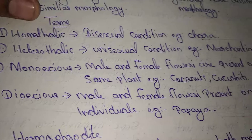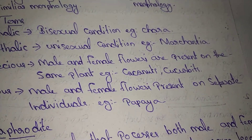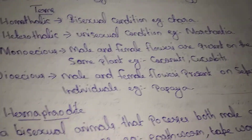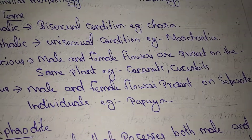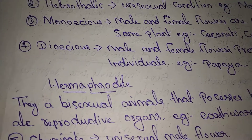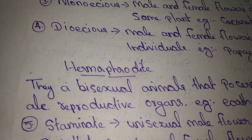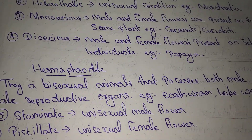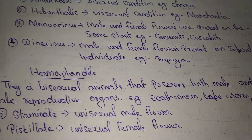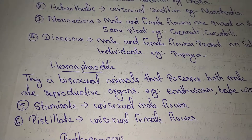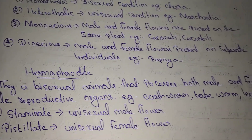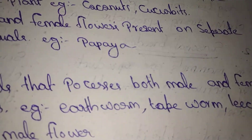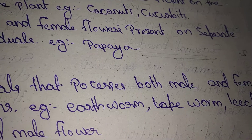Monoecious — male and female flowers present on the same plant. Dioecious — male and female flowers present on separate individuals. Example from NCERT textbook: earthworm. Hermaphrodite — bisexual animals that possess both male and female reproductive organs.